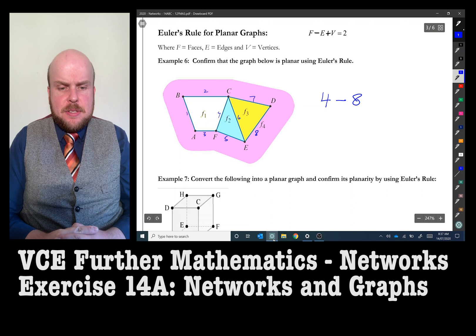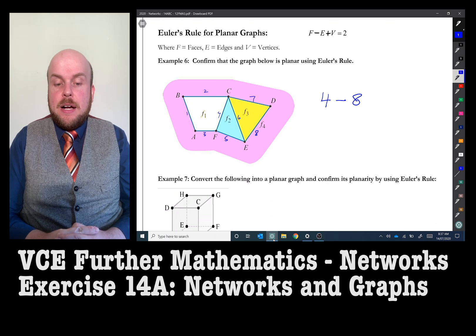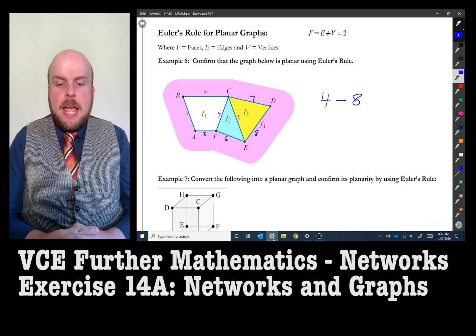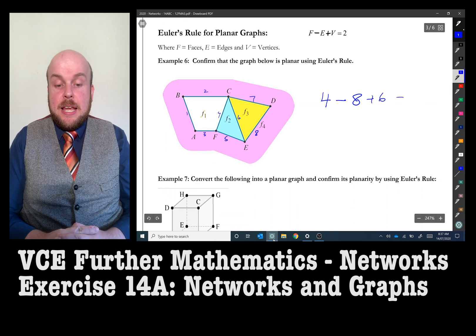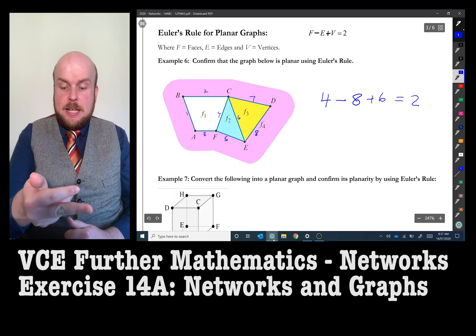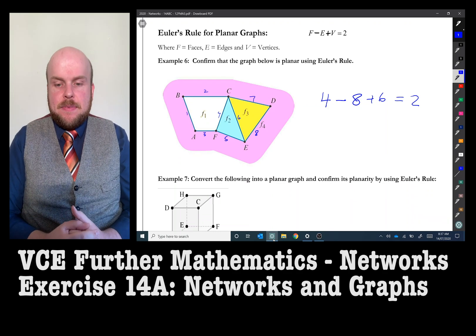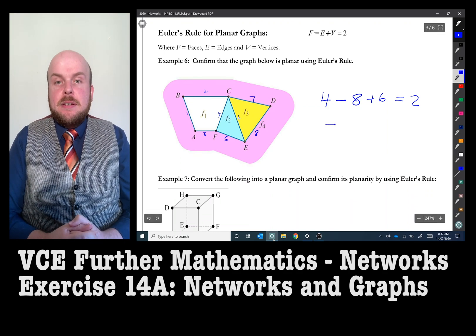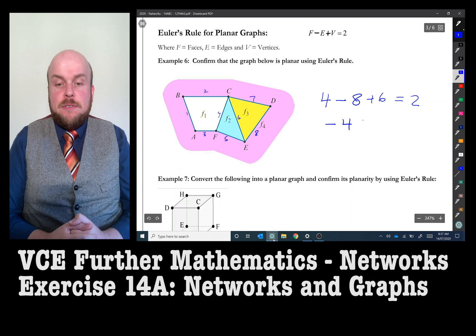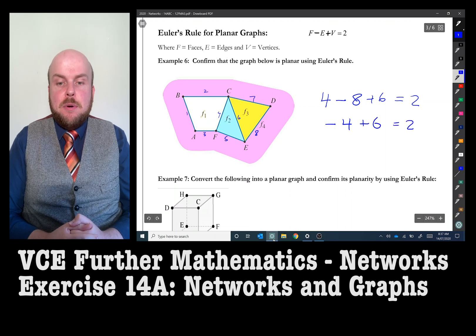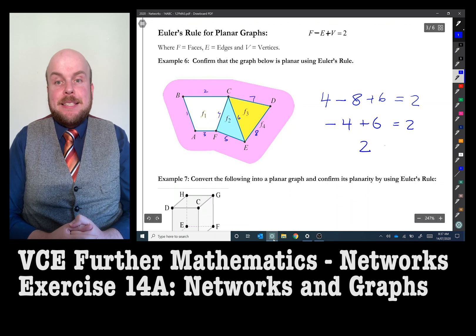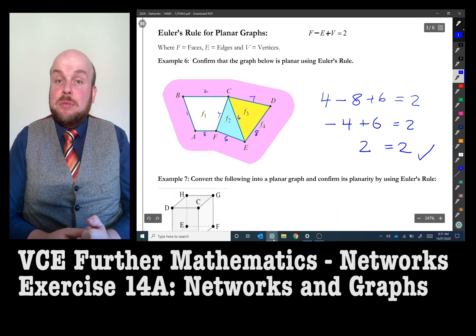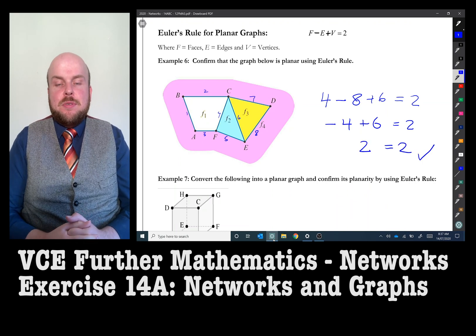The number of edges, there's 1, 2, 3, 4, 5, 6, 7, 8. And the number of vertices there, A, B, C, D, E, F, that is 6. So 4 take away 8 plus 6 equals 2. 4 take away 8 will be negative 4 plus 6 equals 2. Negative 4 plus 6 is equal to 2. So 2 definitely equals 2.